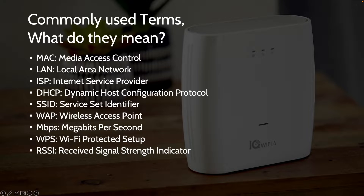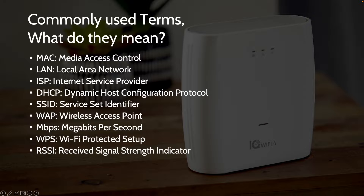ISP, or Internet Service Provider, is the company that consumers pay for internet connectivity. This would be like a Comcast or a Verizon. DHCP, or Dynamic Host Configuration Protocol, is the way the router hands out IP addresses. This is done automatically from the router or gateway.